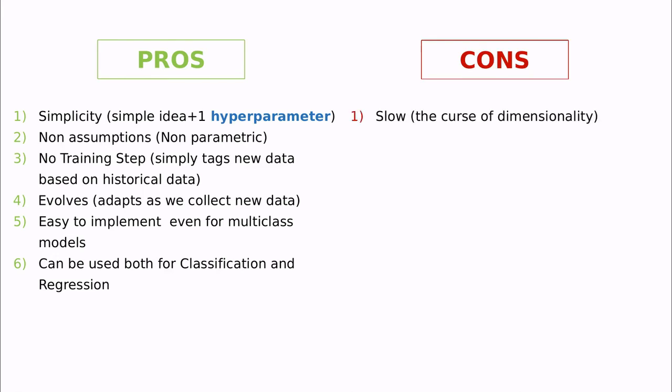But the con is slow, and this is called the curse of dimensionality, because you have to compute which are the nearest neighbors. And imagine that you have a thousand data points, and you add a new observation. So first you have to measure the distance between one and the other thousand, and then you have to decide which are the k closest ones. So this is not very fast, actually.